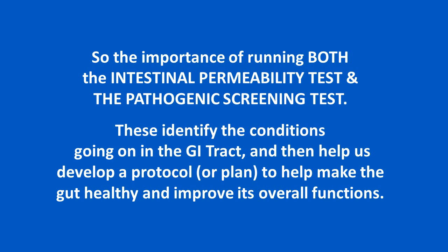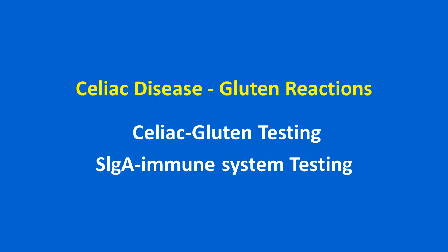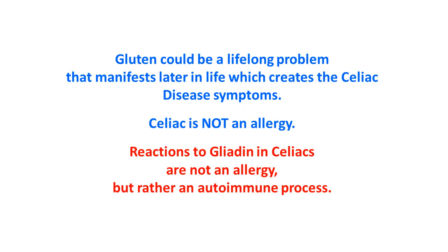The importance of running both the intestinal permeability test and the pathogenic screening test is clear. These identify the conditions going on in the GI tract and help develop a protocol to make the gut healthy and improve its overall functions. Next, we'll discuss celiac disease, gluten reactions, celiac gluten testing, and the SIgA immune system testing. Gluten could be a lifelong problem that manifests later in life, creating celiac disease symptoms. Celiac is not an allergy — reactions to gliadin in celiacs are an autoimmune process.